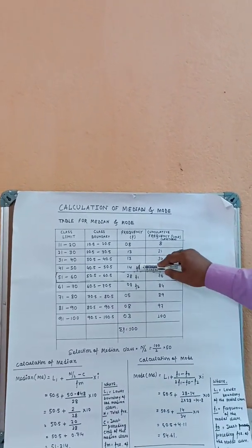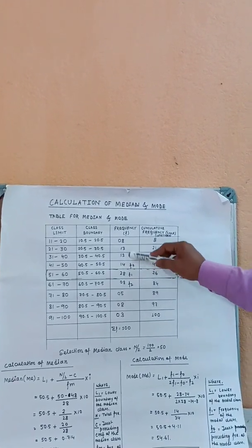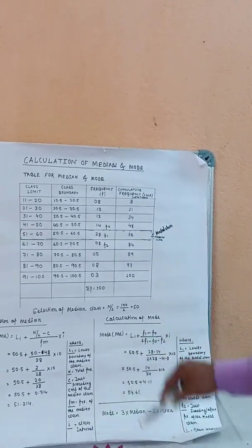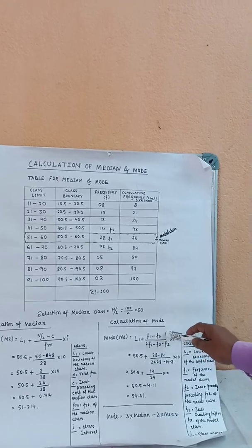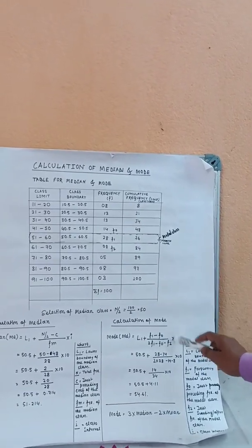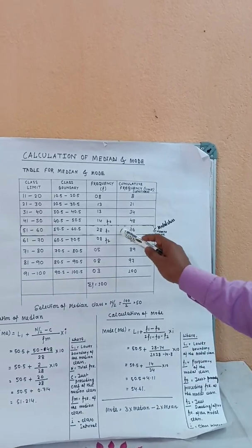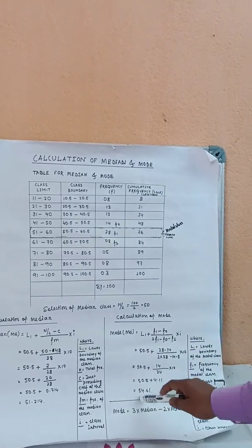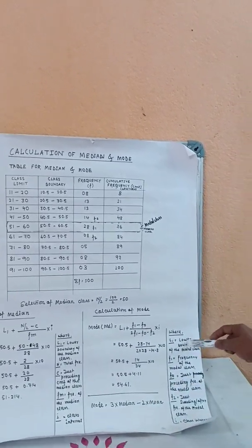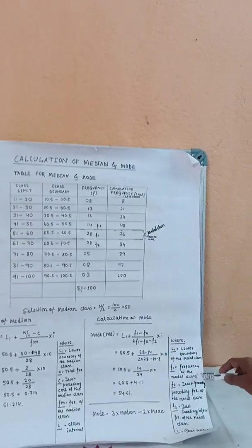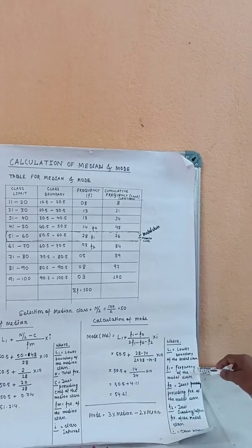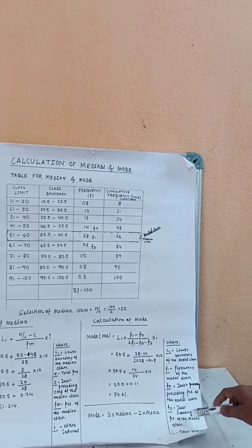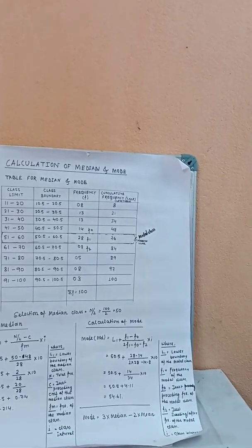F0 is the frequency of the class just preceding the modal class, and F2 is the frequency of the class just succeeding the modal class. I means the class interval. L1 is the lower boundary of the modal class, which is 50.5. Substituting these values gives a mode of 54.61.